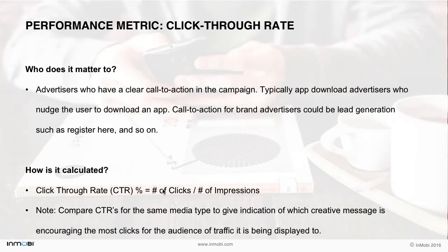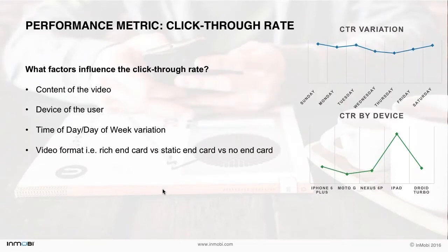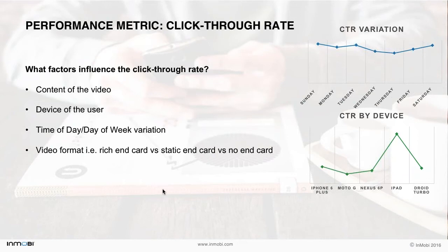Let's dive into the factors that can influence the click-through rate. The first most important factor is content — the content must be engaging and compelling enough for the user to express interest by clicking on the ad. Depending on the ad format, whether a splash video ad, skippable, or non-skippable, ensure you create variations of your video ad for the desired length. For example, splash video ads should not last more than 5 seconds, while non-skippable should ideally be between 10 to 15 seconds. Secondly, the device of the end user does affect CTR — we've seen a stark variation in CTRs by device type, such as between the iPhone 6 Plus, the Moto G, and the iPad.